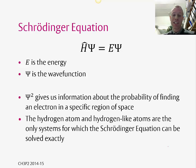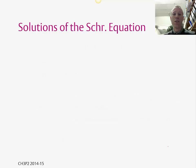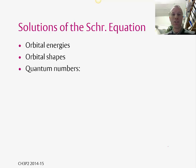It's also worth pointing out at this stage that the hydrogen atom and hydrogen-like atoms are the only systems for which the Schrödinger equation can be solved exactly. If you solve the Schrödinger equation for the hydrogen atom, you then get your orbital energies. You'll get the energies for the different orbitals. You'll get the shapes of these orbitals: S, P, D orbitals and so on. And of course, you get lots of quantum numbers which come out.